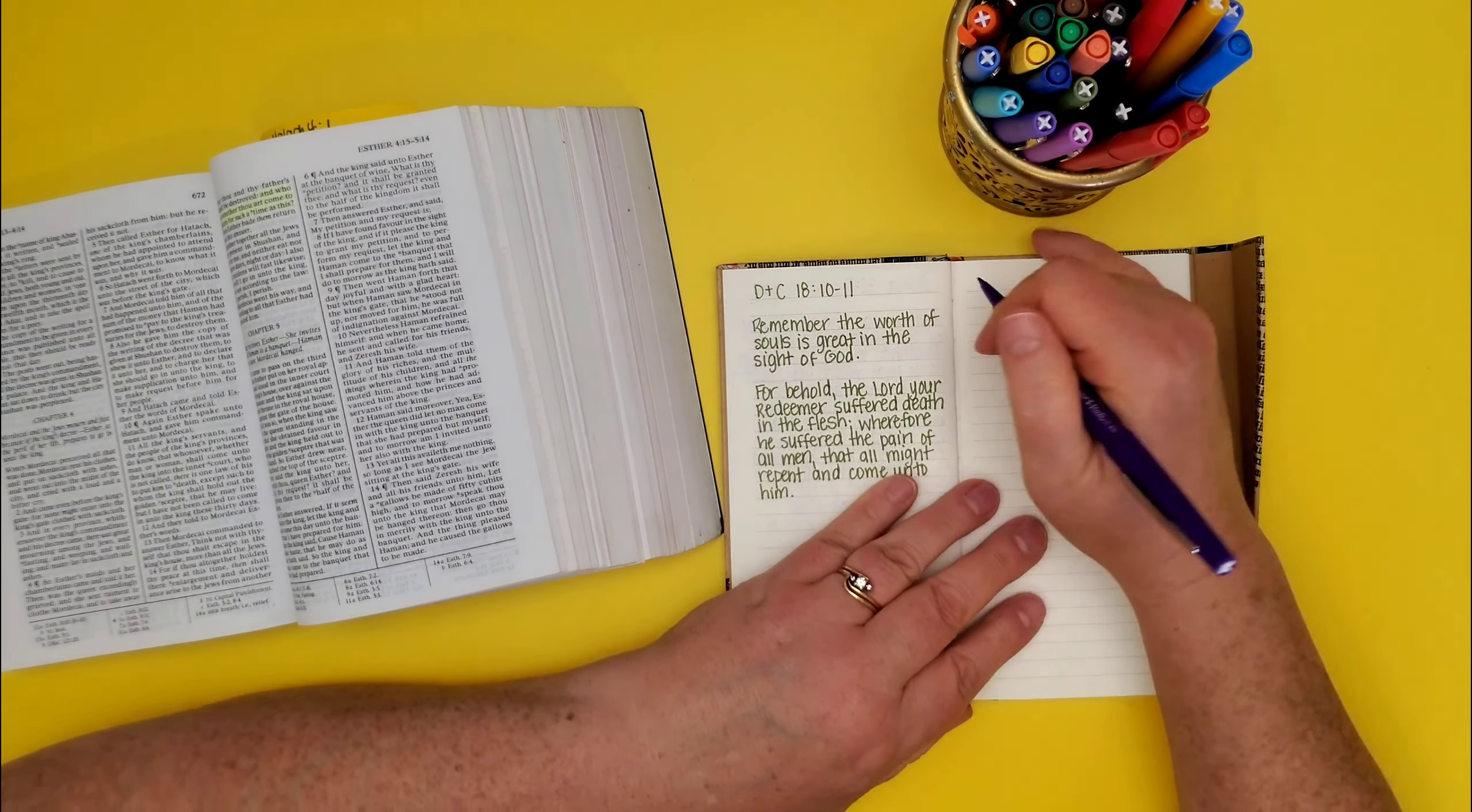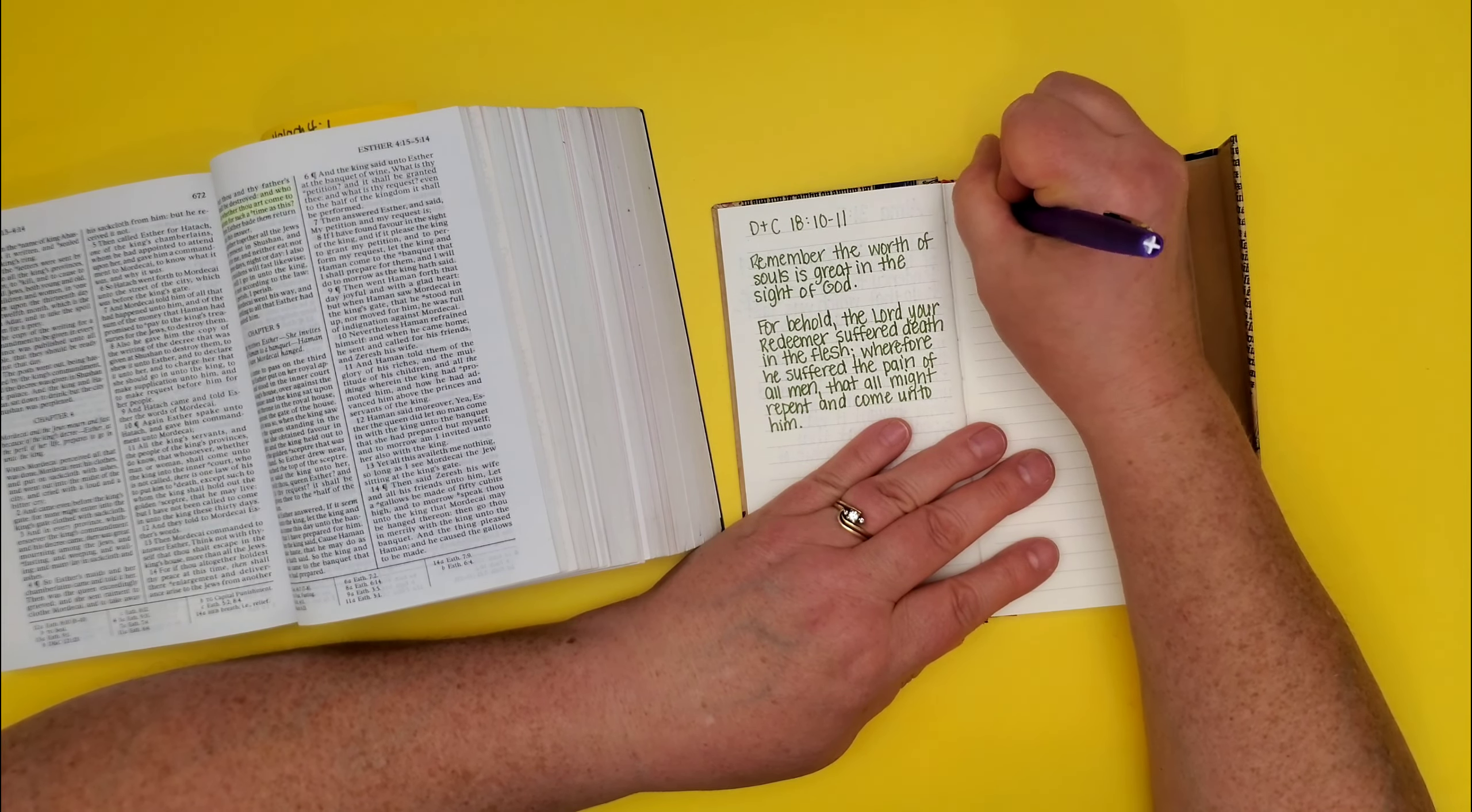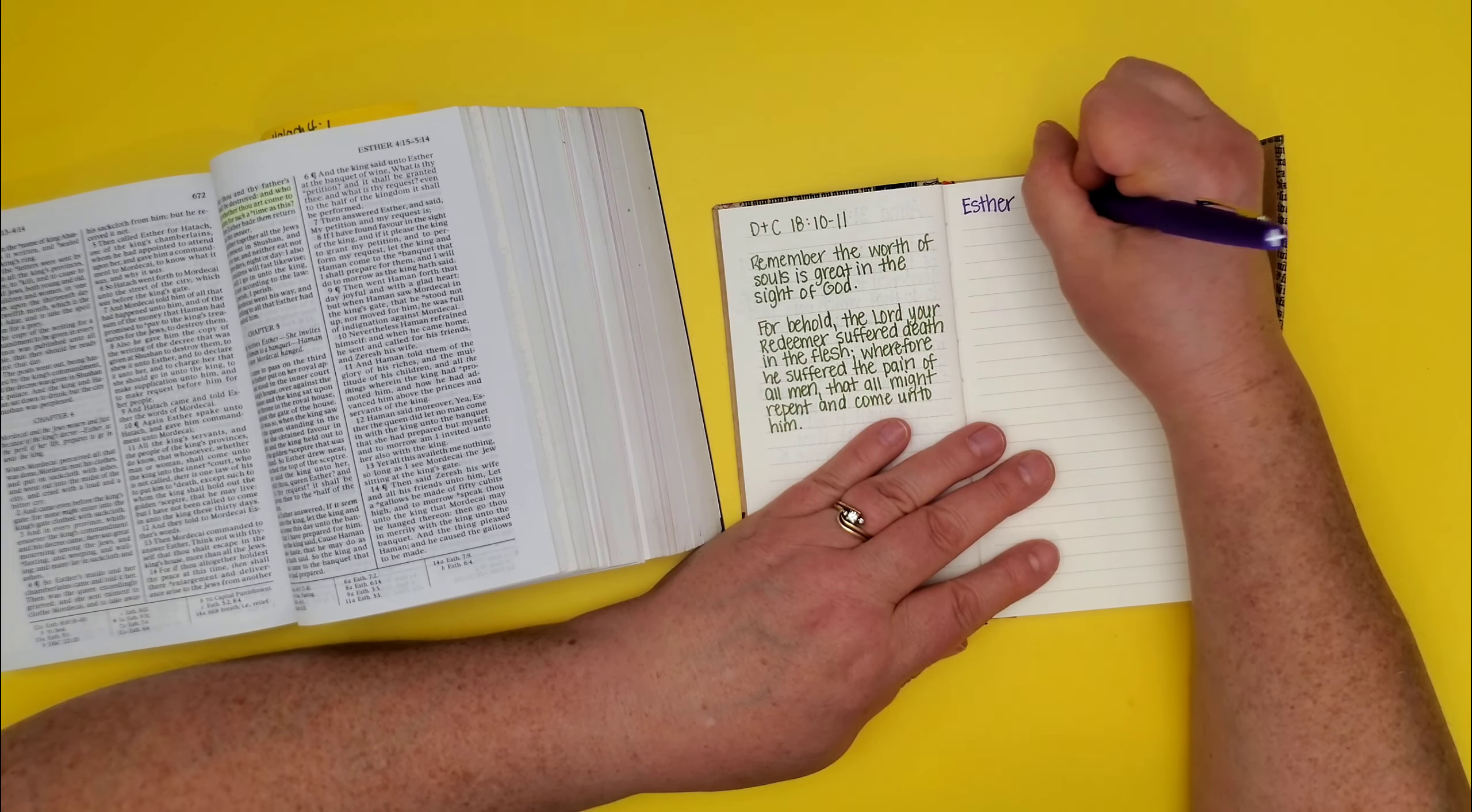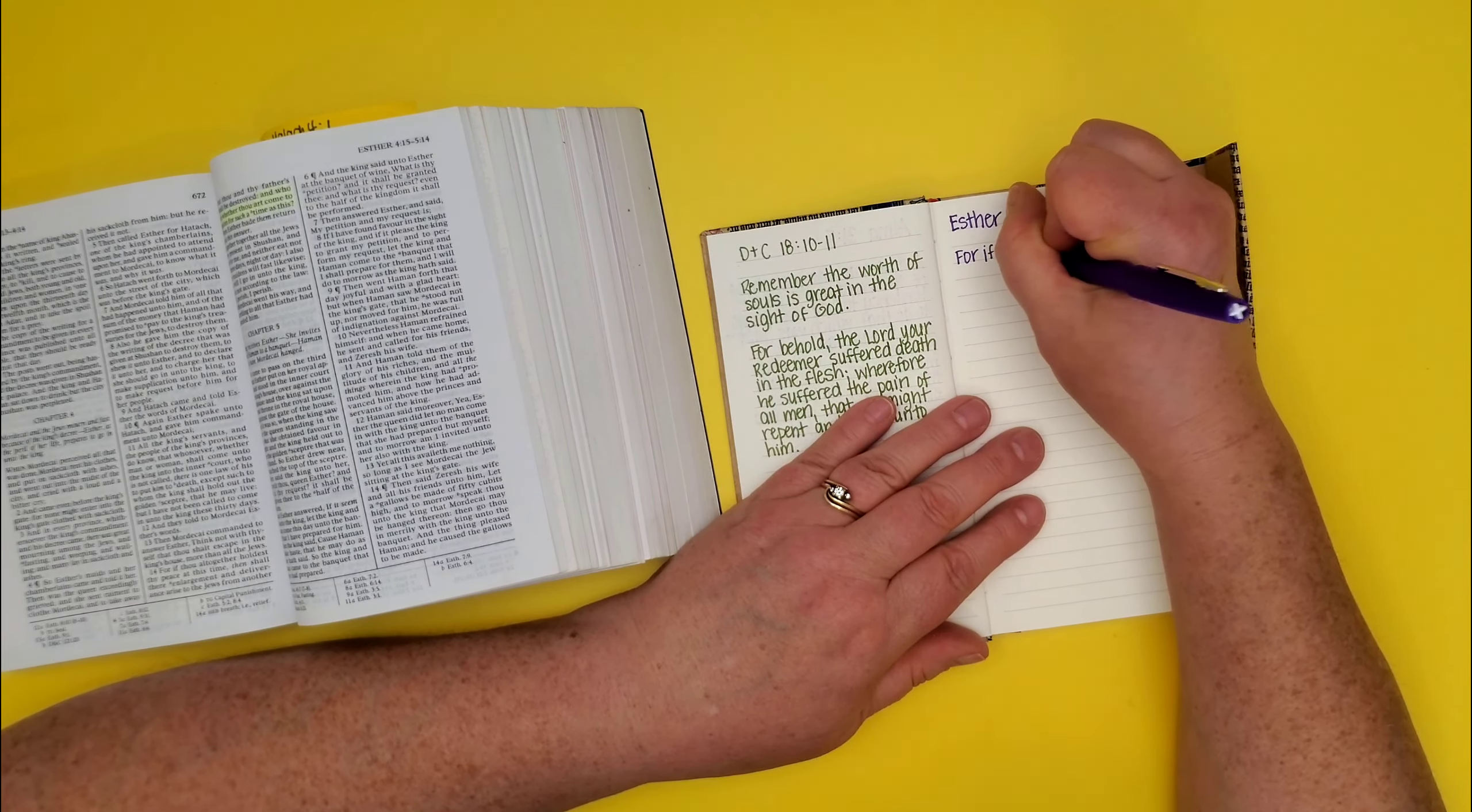For if thou altogether holdest thy peace at this time, then shall their enlargement and deliverance arise to the Jews from another place. But thou and thy father's house shall be destroyed. And who knoweth whether thou art come to the kingdom for such a time as this?